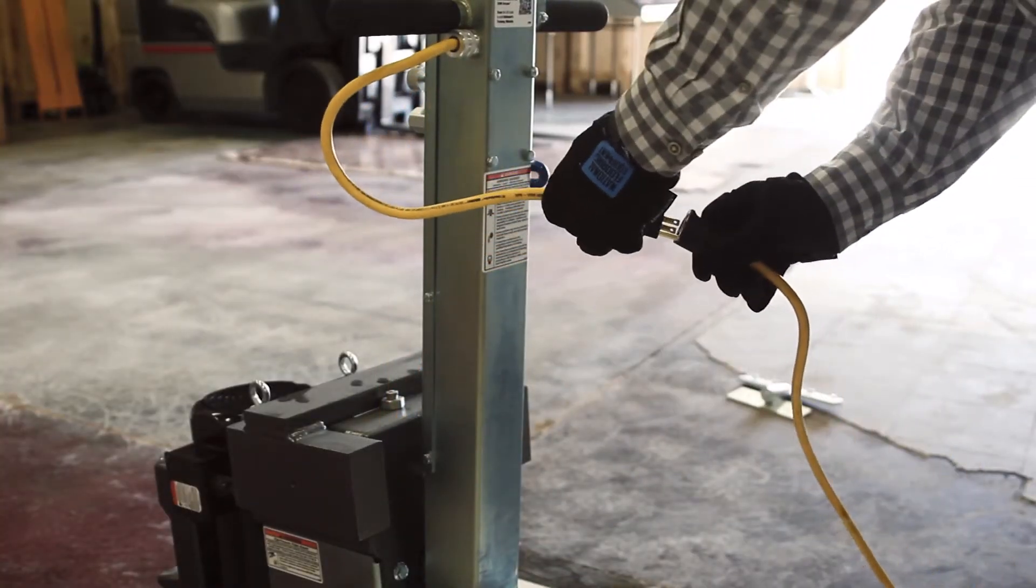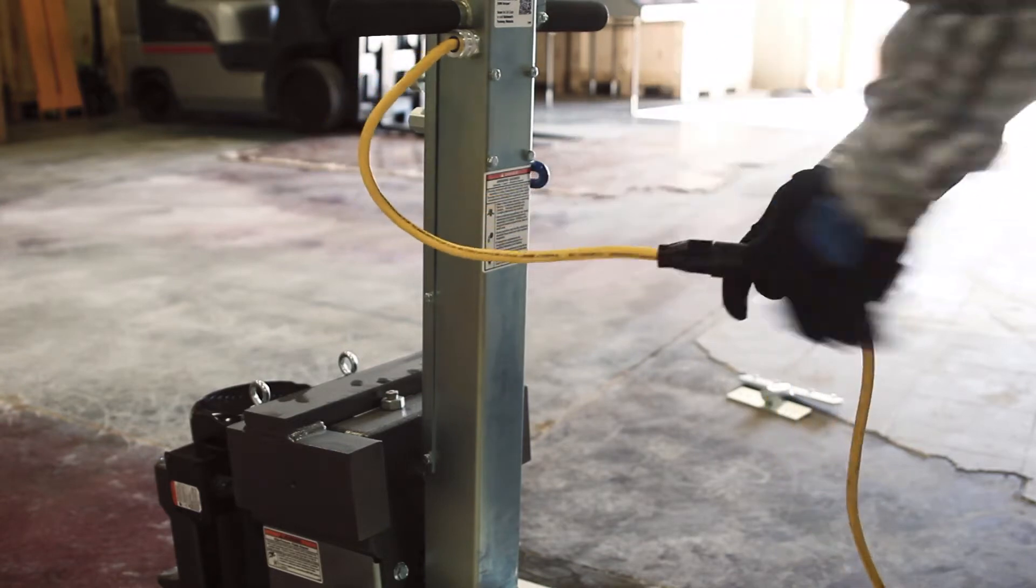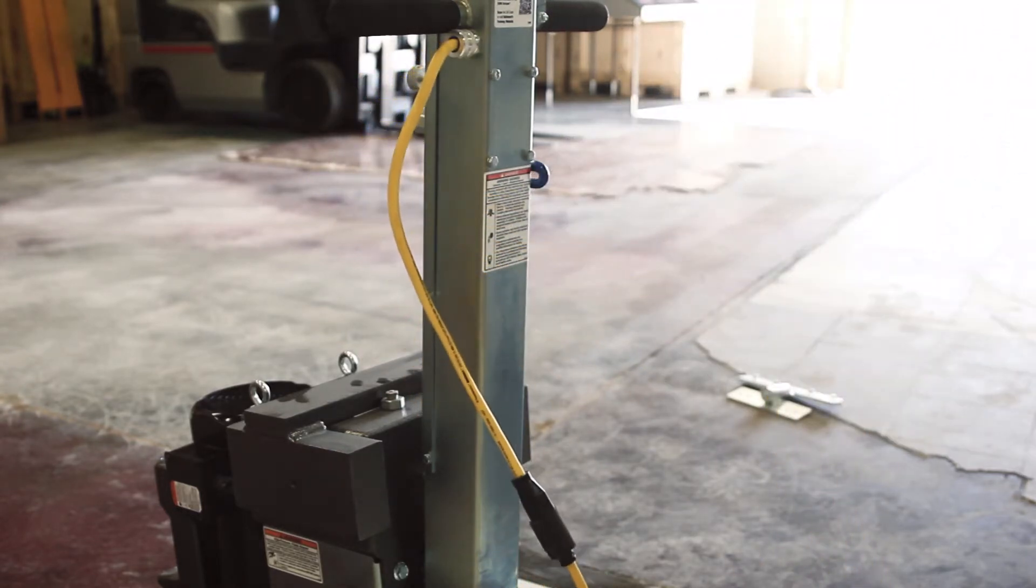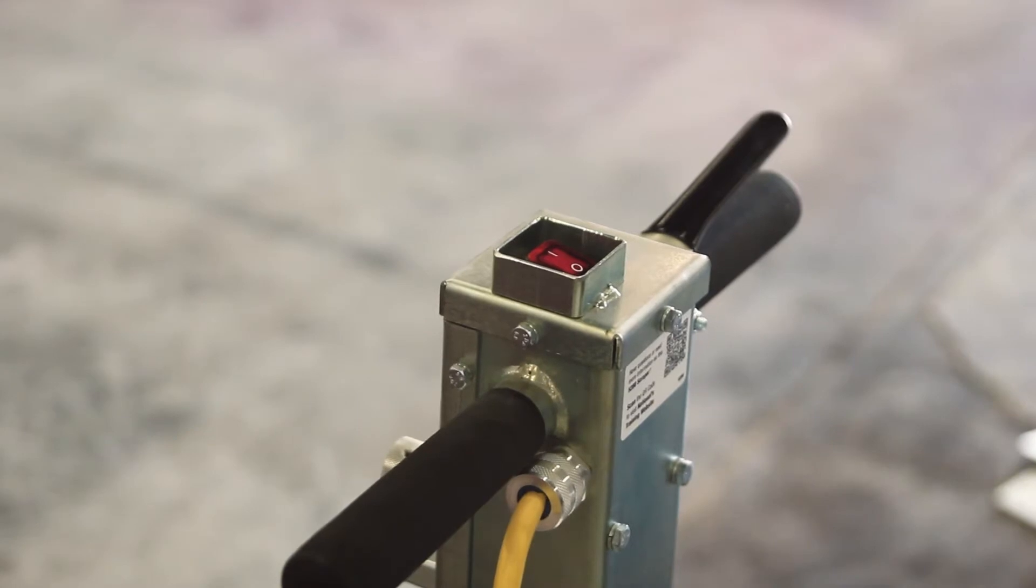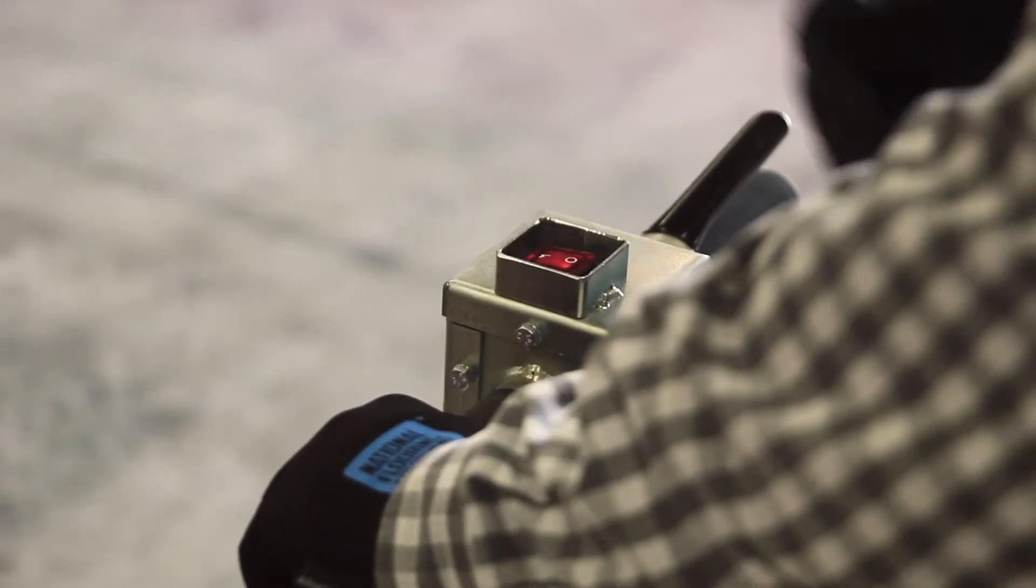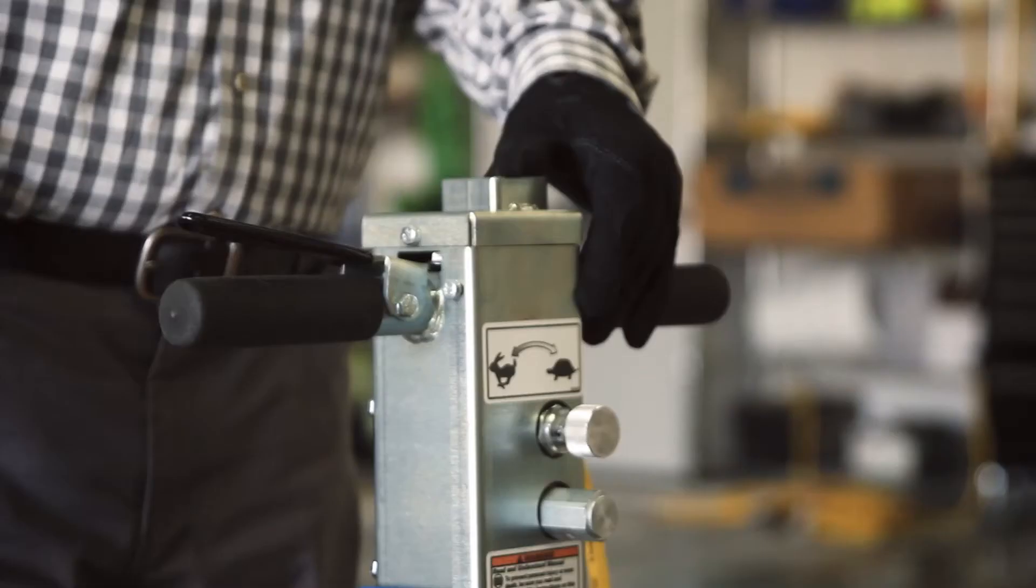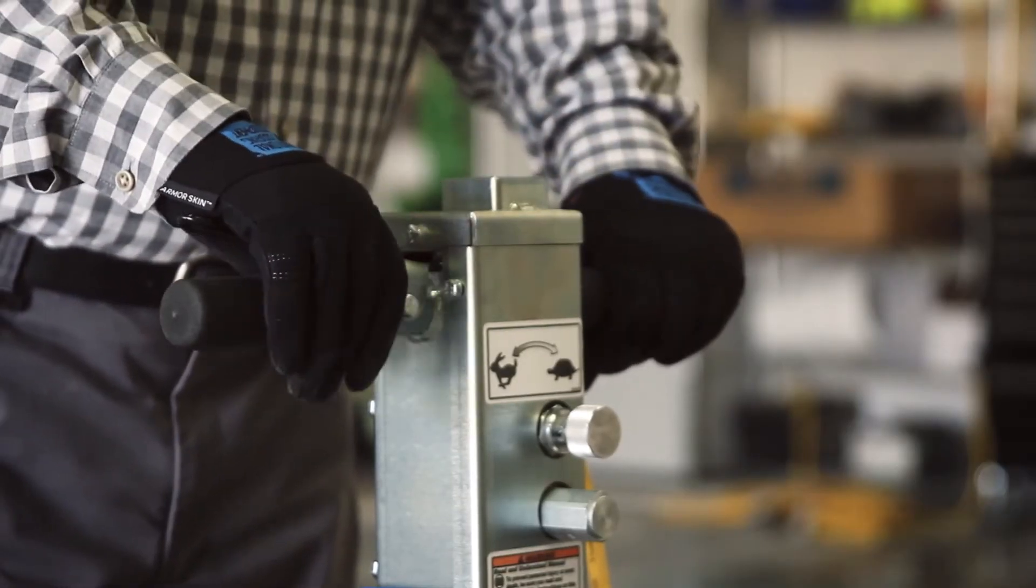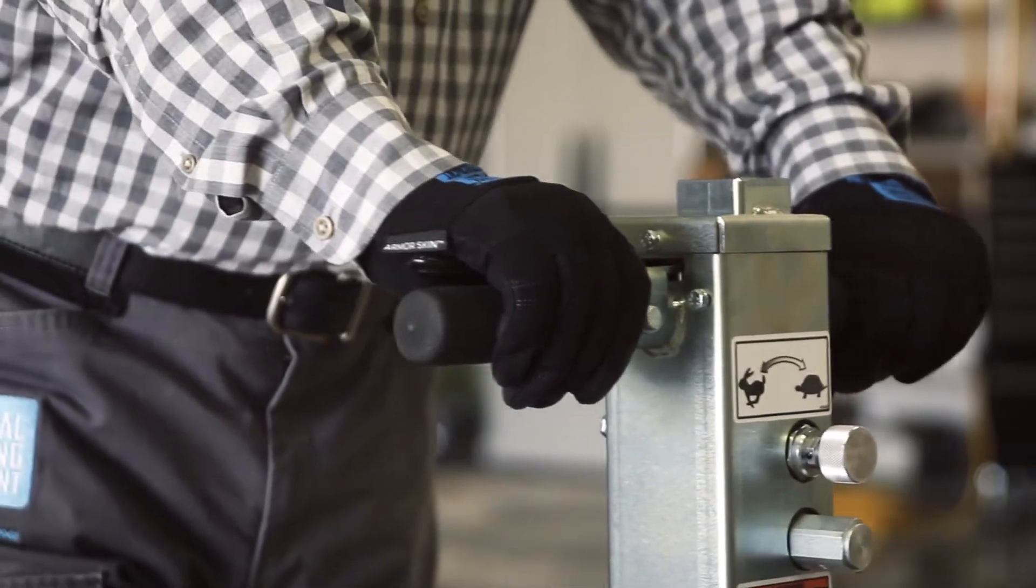It is important to use a 12 gauge, 50 foot extension cord to connect your 5280 to power. Turn your machine on by pushing the red power button located on the handle. Press the lever on the right handle to move the machine forward.